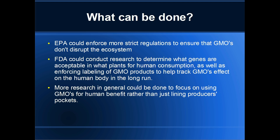So what can we do? The EPA could enforce regulations to make sure that GMOs being introduced into the ecosystem don't drastically disrupt it or throw off the balance. The FDA could conduct research to determine what genes are acceptable and what people may or may not want to be putting into their body. Another big thing the FDA could do is enforce labeling so people know when they're eating GMOs and what genes have been altered.